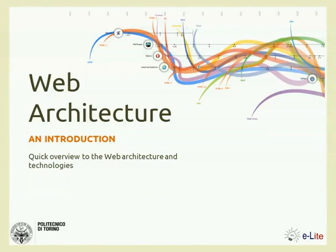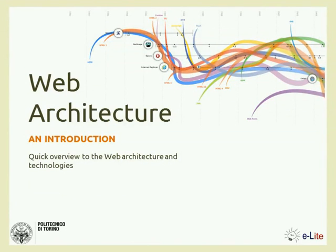For computer engineering students, this is something they already know probably. For the others, it will be something different. We start speaking about web architecture because we will use the web in at least two or three ways during this course. The first way is the next deliverable and all subsequent deliverables — the website on GitHub that will describe your project and provide information to us, but also to everyone on the Internet.